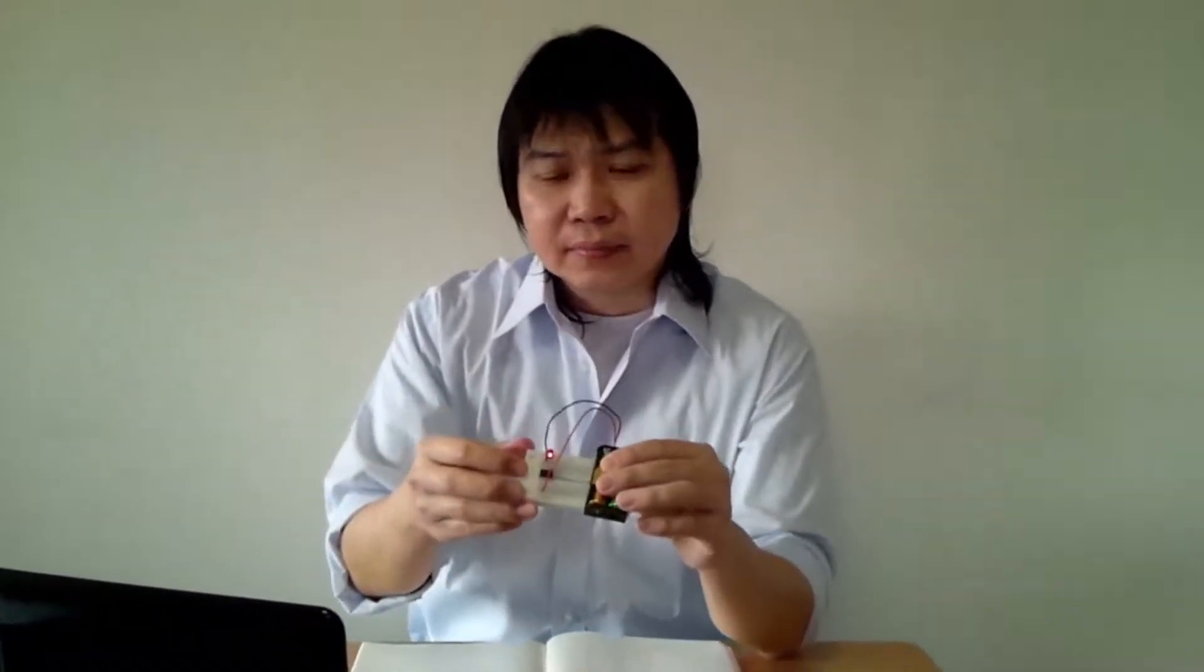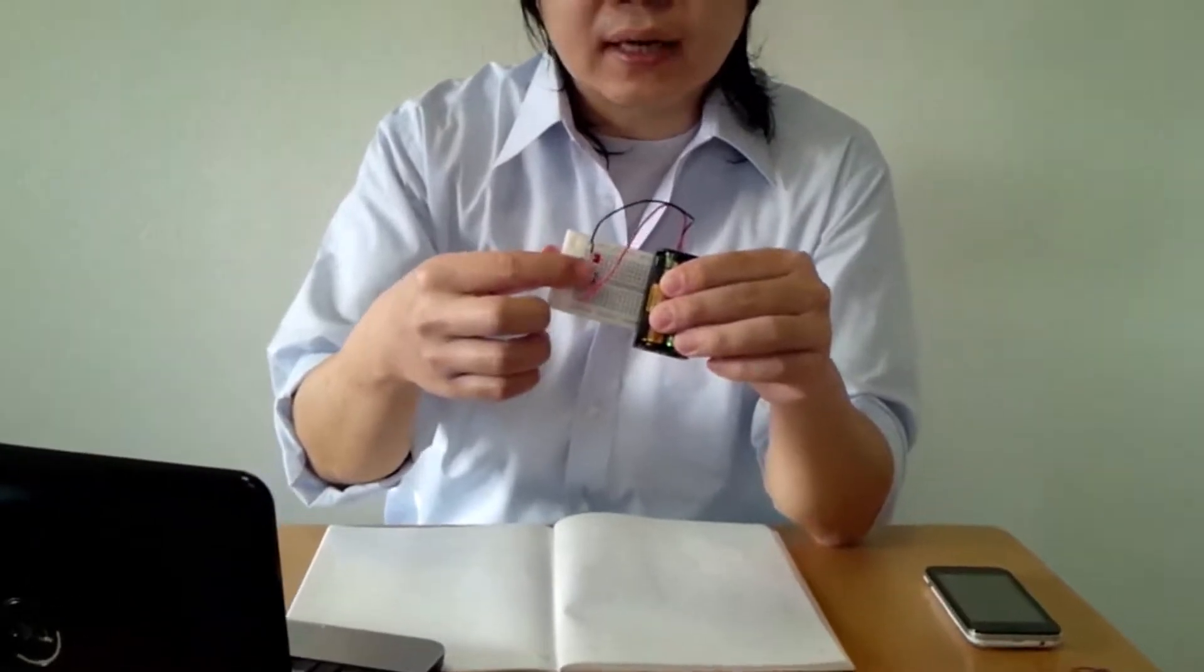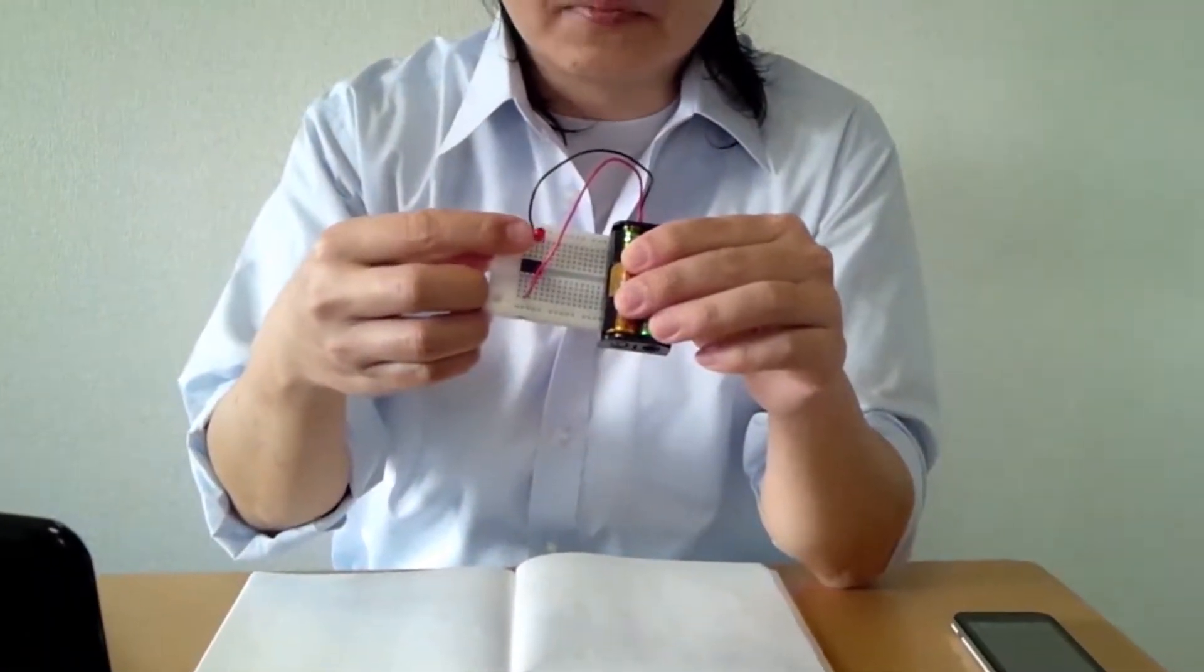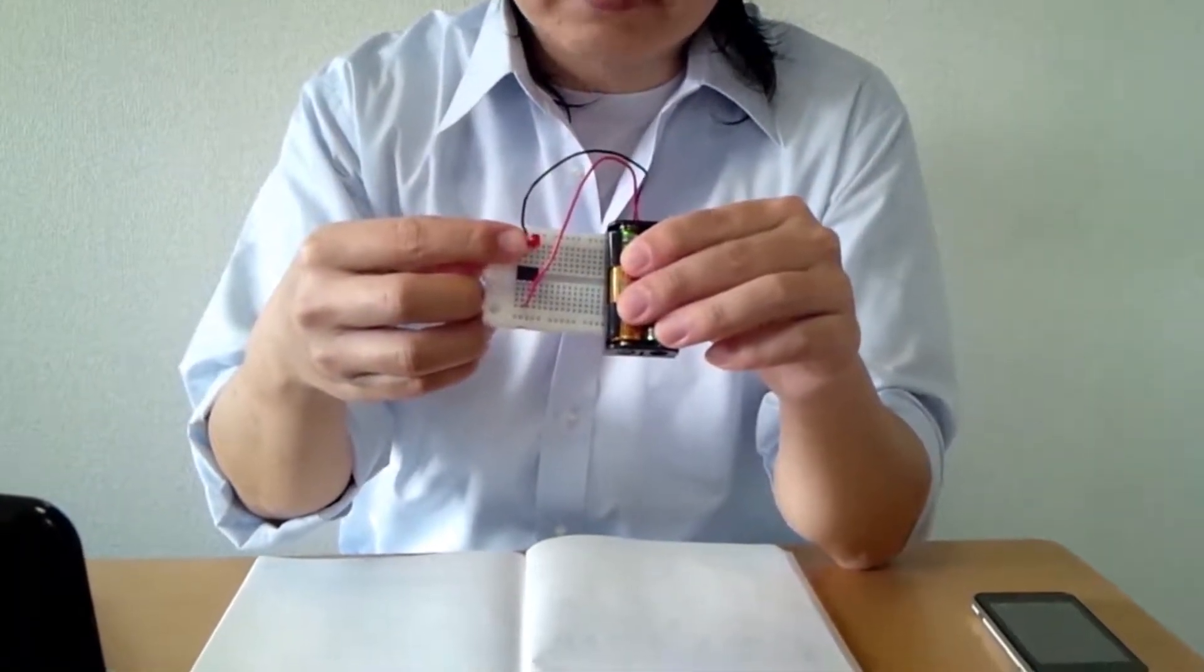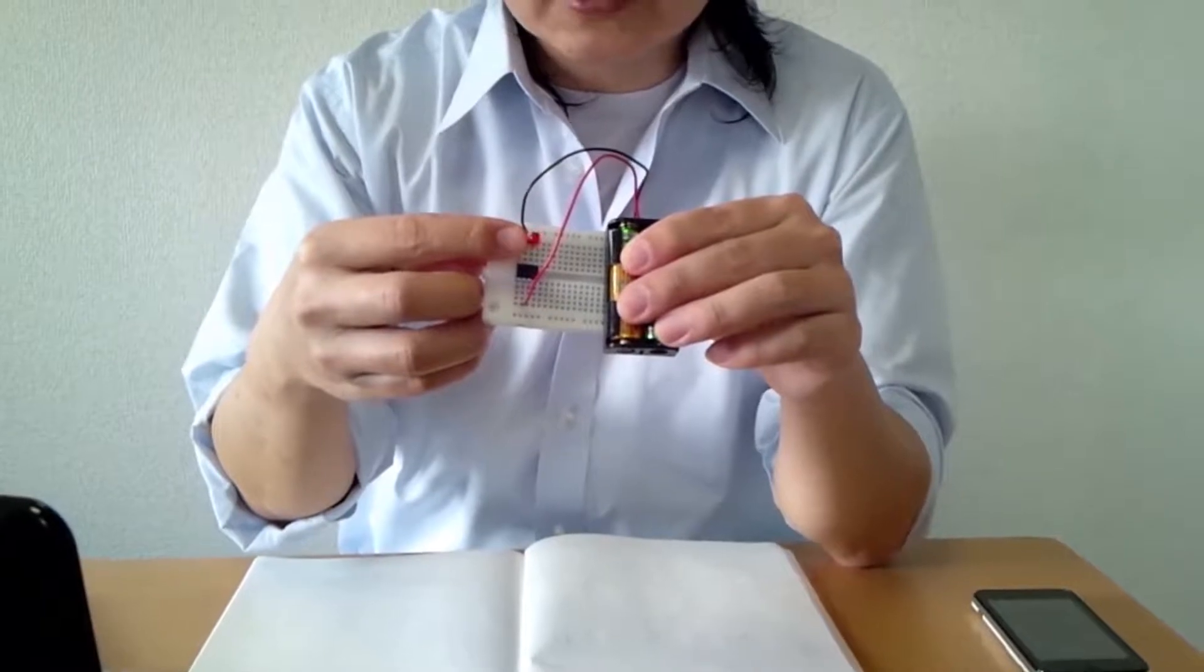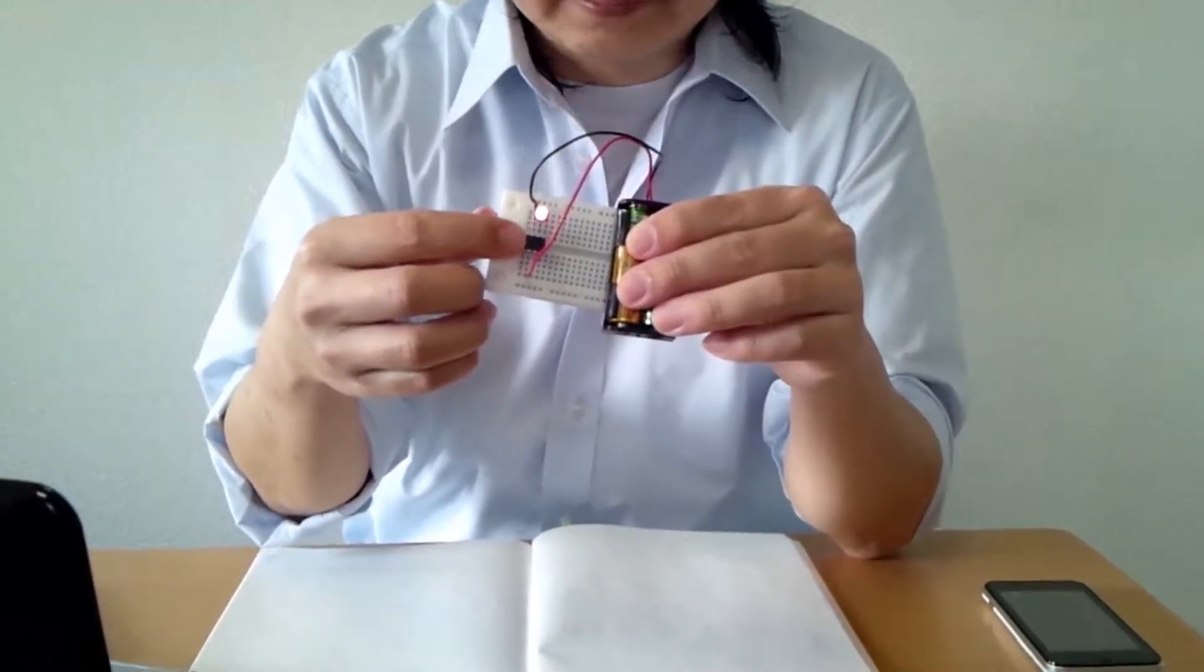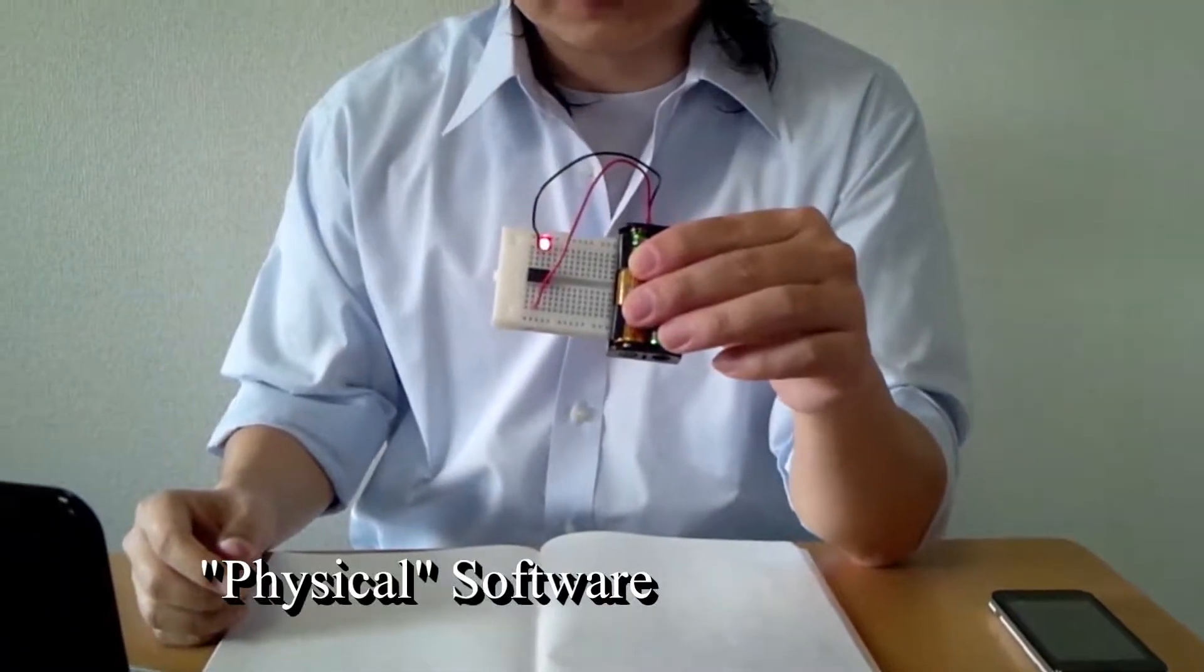Let me show you this little device here. This is a complete computer inside this black device here, and this is a small light. The light is being controlled by the software, and the software is running inside this device. This is one example of physical software.